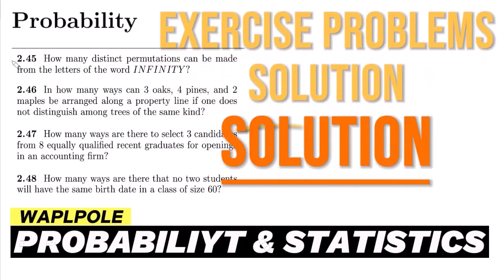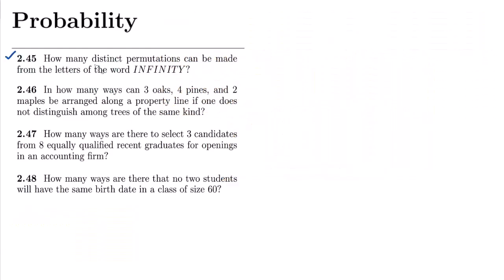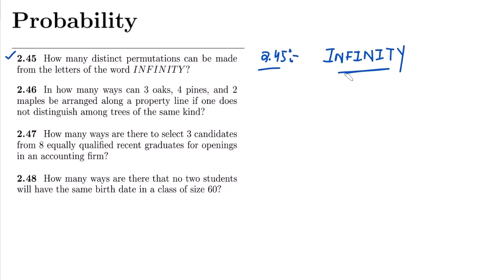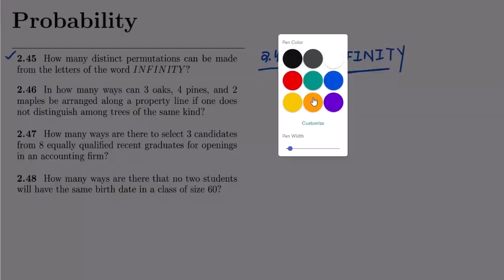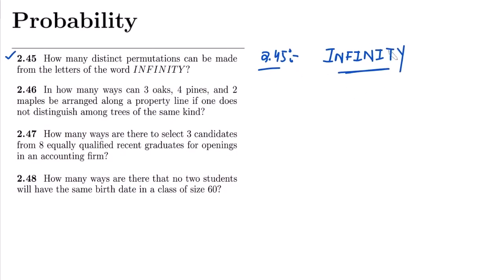Hi guys. This is question 2.45, and here we have to find out how many distinct permutations can be made from the letters of the word 'infinity.' Let me write it here. The concept behind finding the number of distinct permutations from the letters of this word involves a key formula.